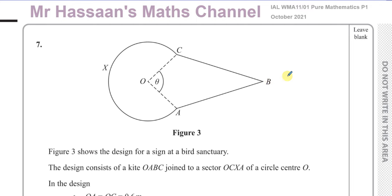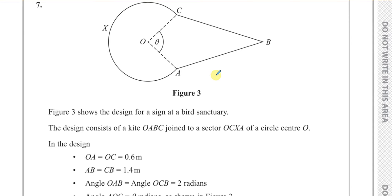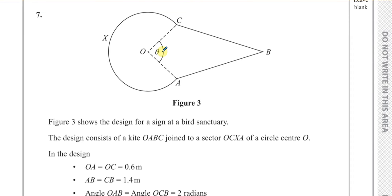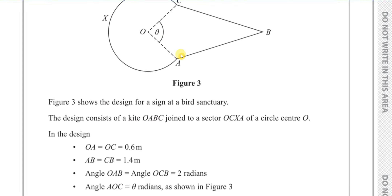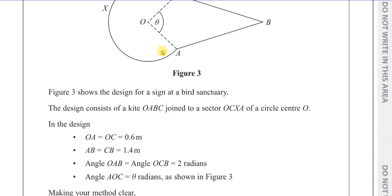This question is about radian measure. We're told about a design for a sign at a bird sanctuary. The design consists of a kite OABC joined to a sector of a circle OCXA with centre O. OC and OA are both 0.6 metres, AB and CB are both 1.4 metres, angles OAB and OCB are both 2 radians, and angle AOC equals theta radians as shown in the figure.